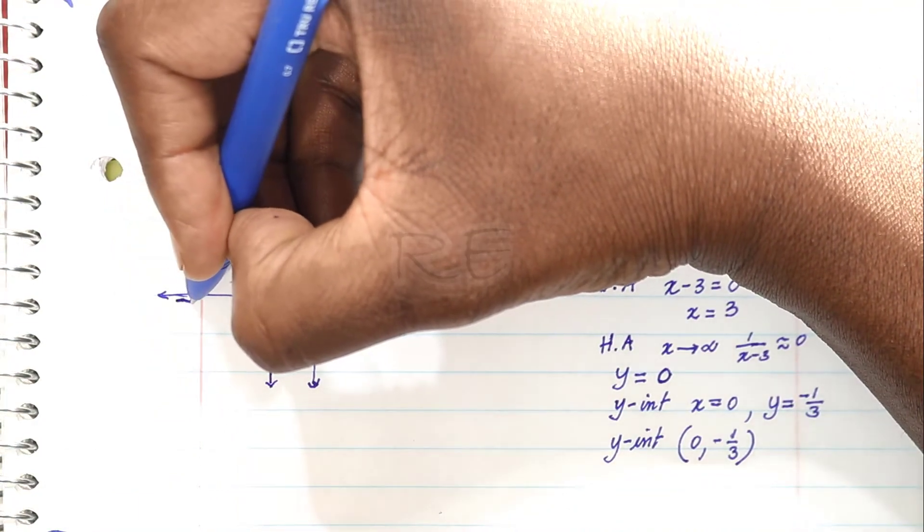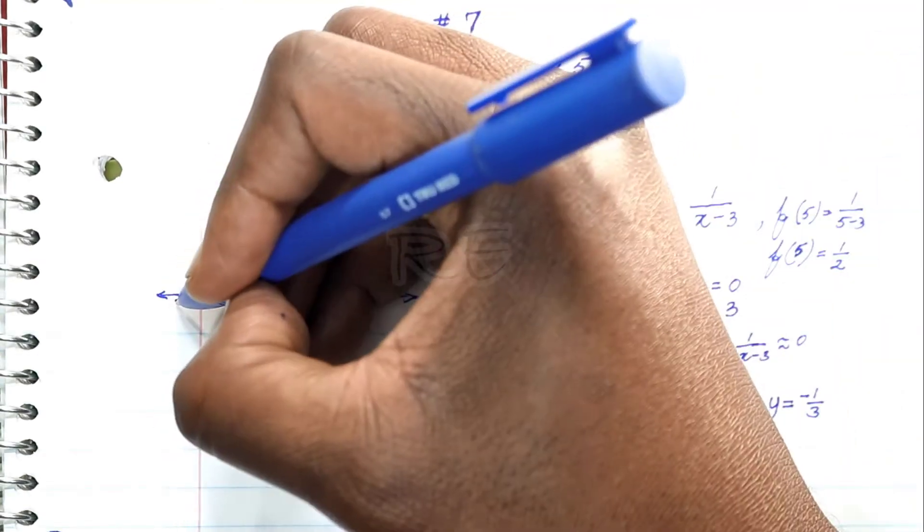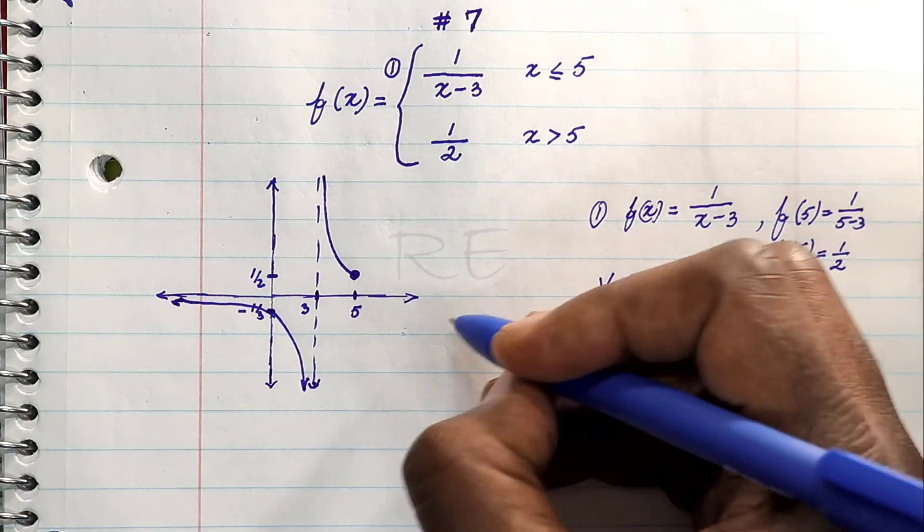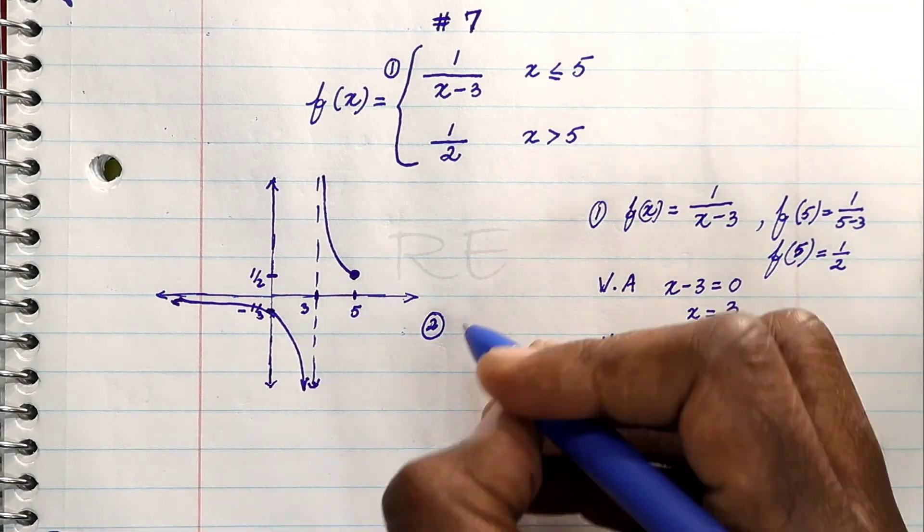At the extreme, the curve will approach the x-axis from below, goes through negative 1/3, and approaches 3 from the left.